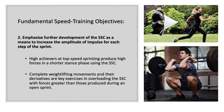The second fundamental speed training objective is to emphasize further development of the stretch shortening cycle as a means to increase the amplitude of impulse for each step of the sprint. Ultimately you want to develop eccentric strength during the pre-stretch. High achievers at top-end speed produce high forces in a short stance phase during the stretch shortening cycle. Completing weightlifting movements and their derivatives are key exercises, overloading the stretch shortening cycle with forces greater than those produced during an open sprint.